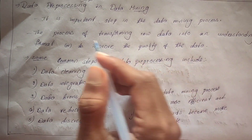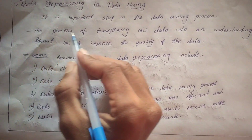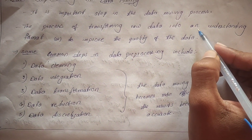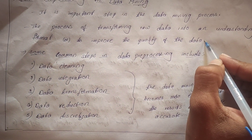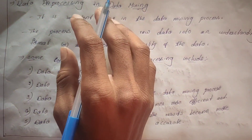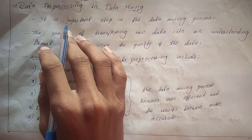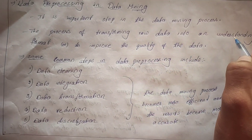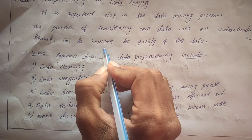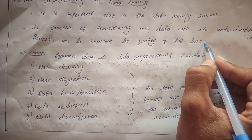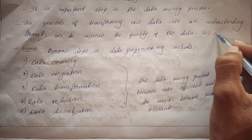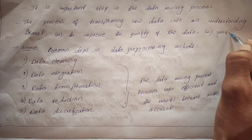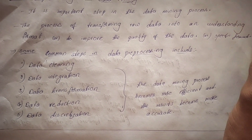The process of transforming raw data into an understandable format improves the quality of the data. We use data preprocessing to convert raw data into a more efficient and specified format suitable for data mining.